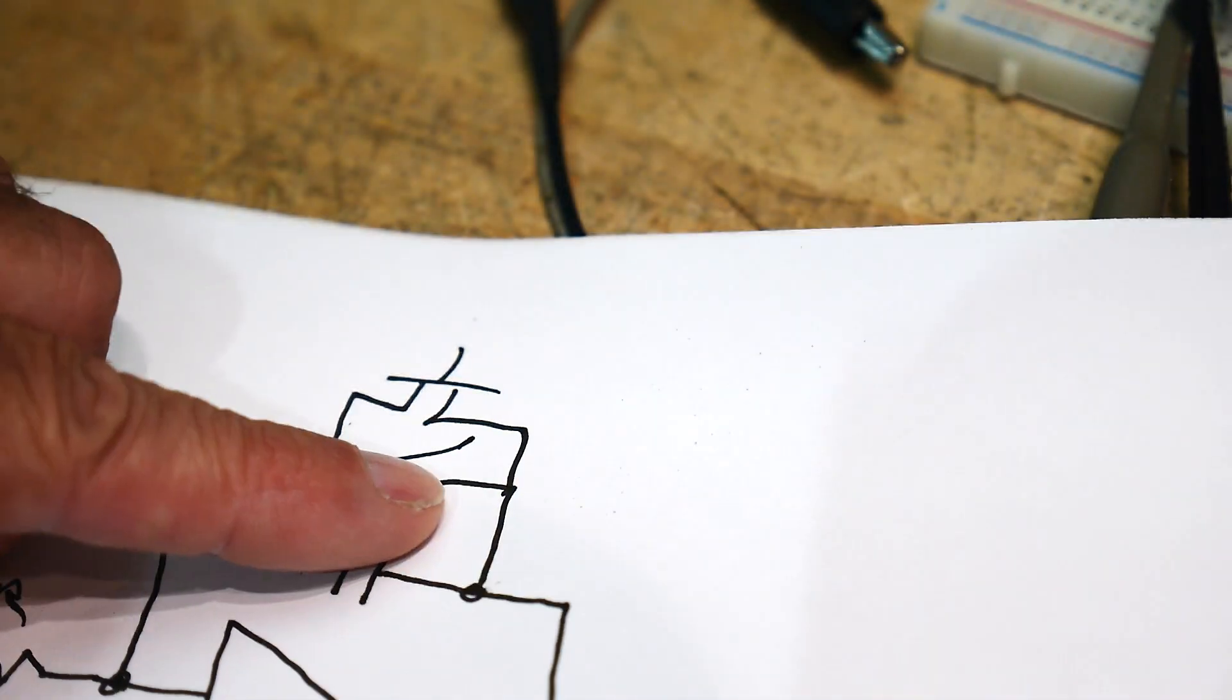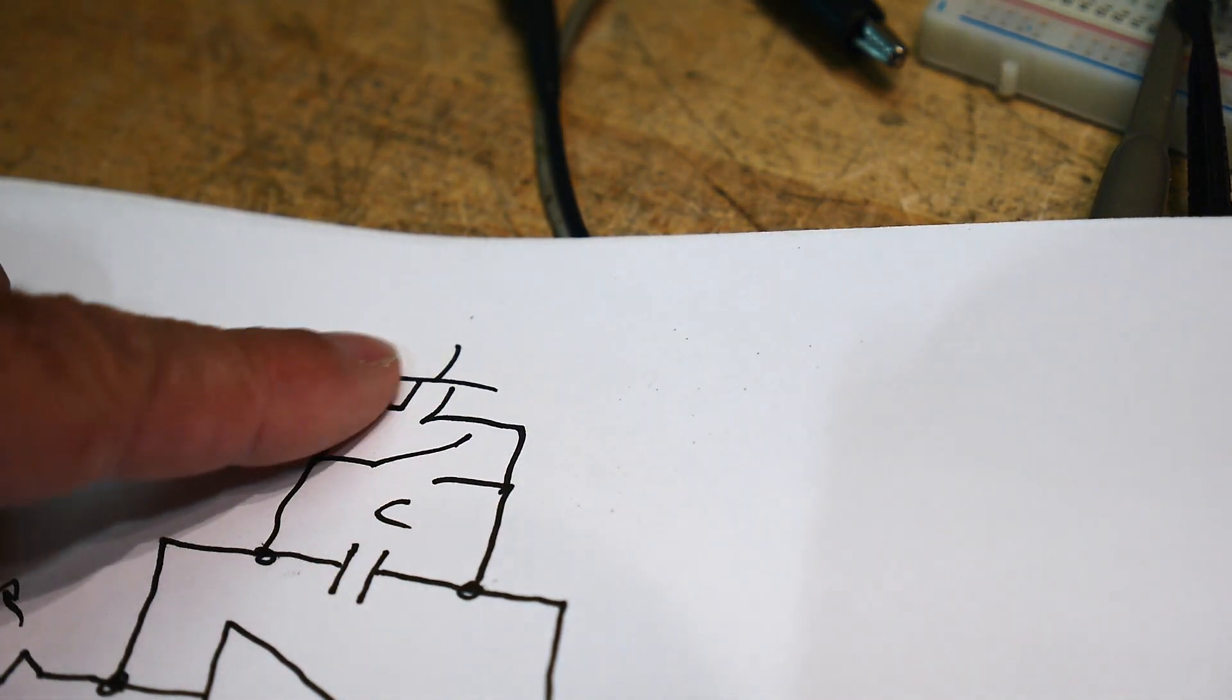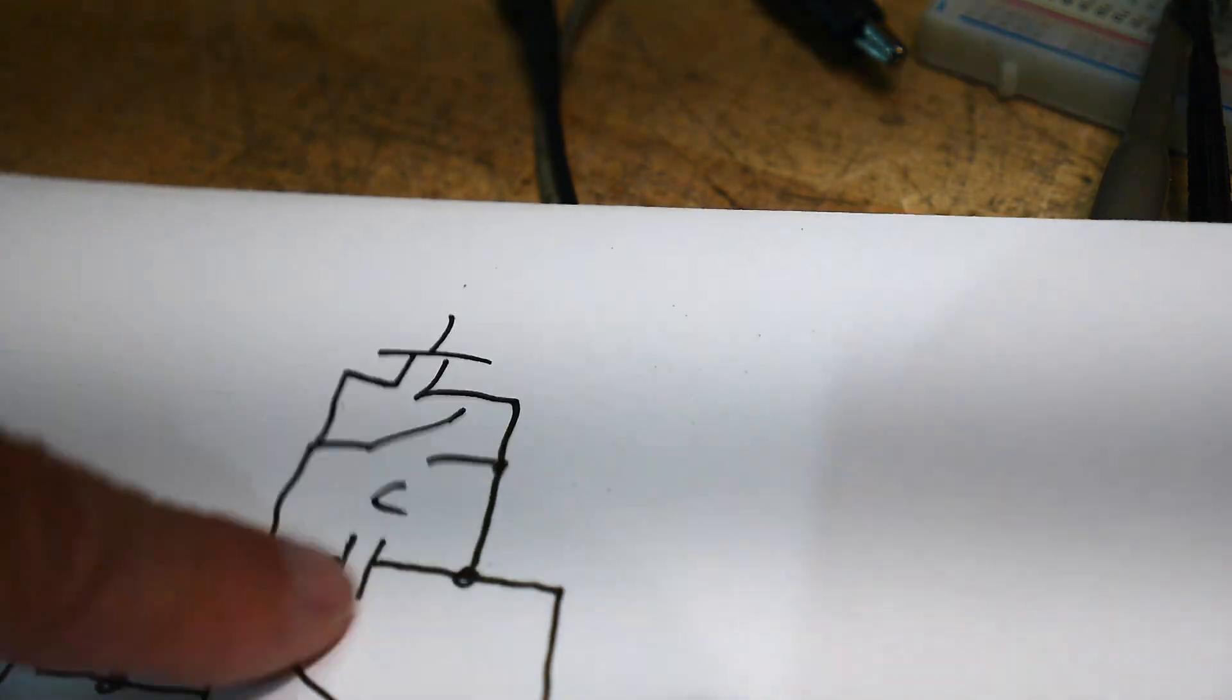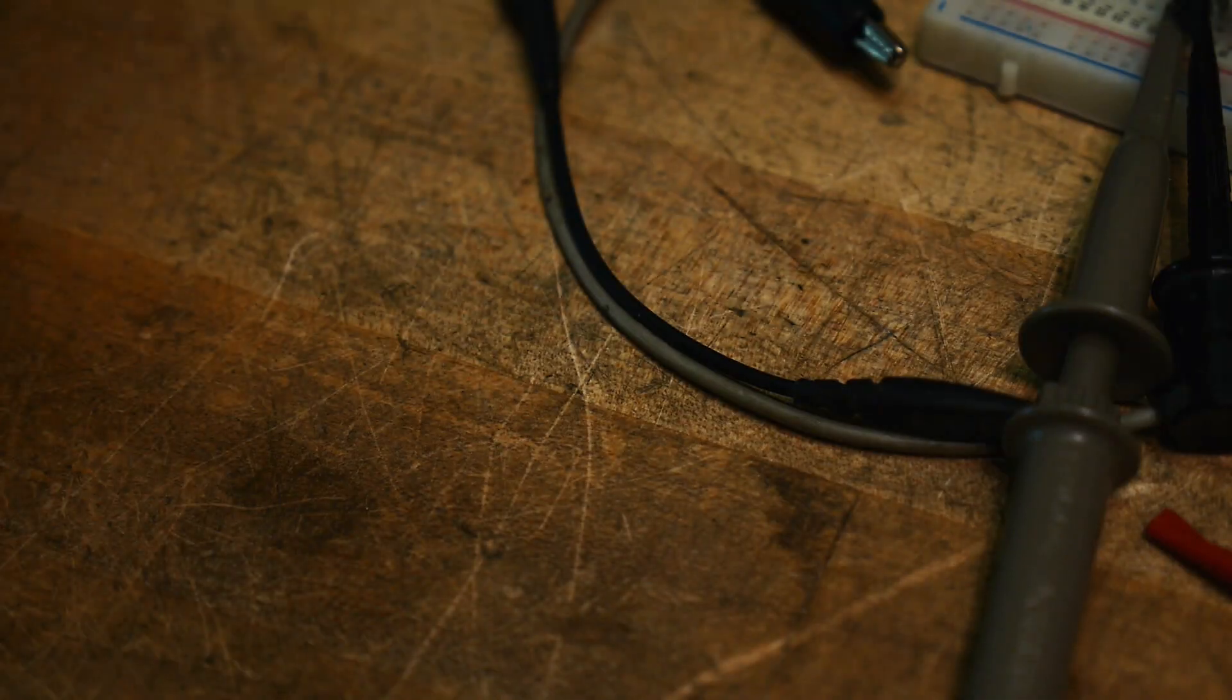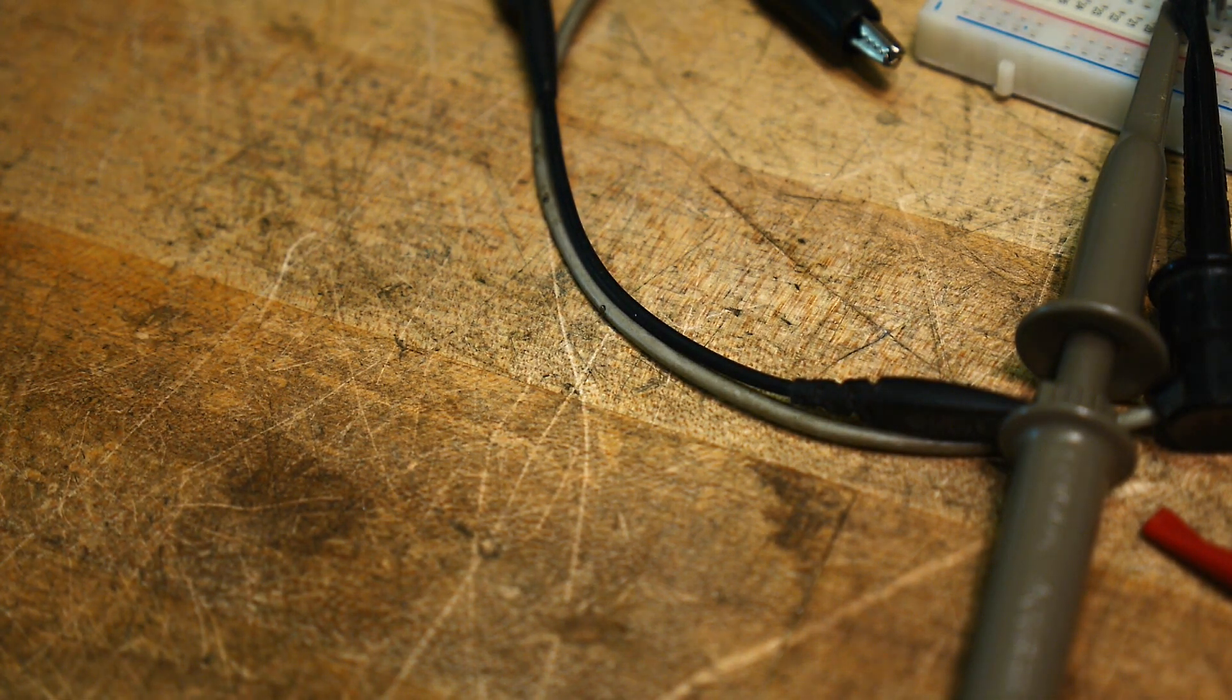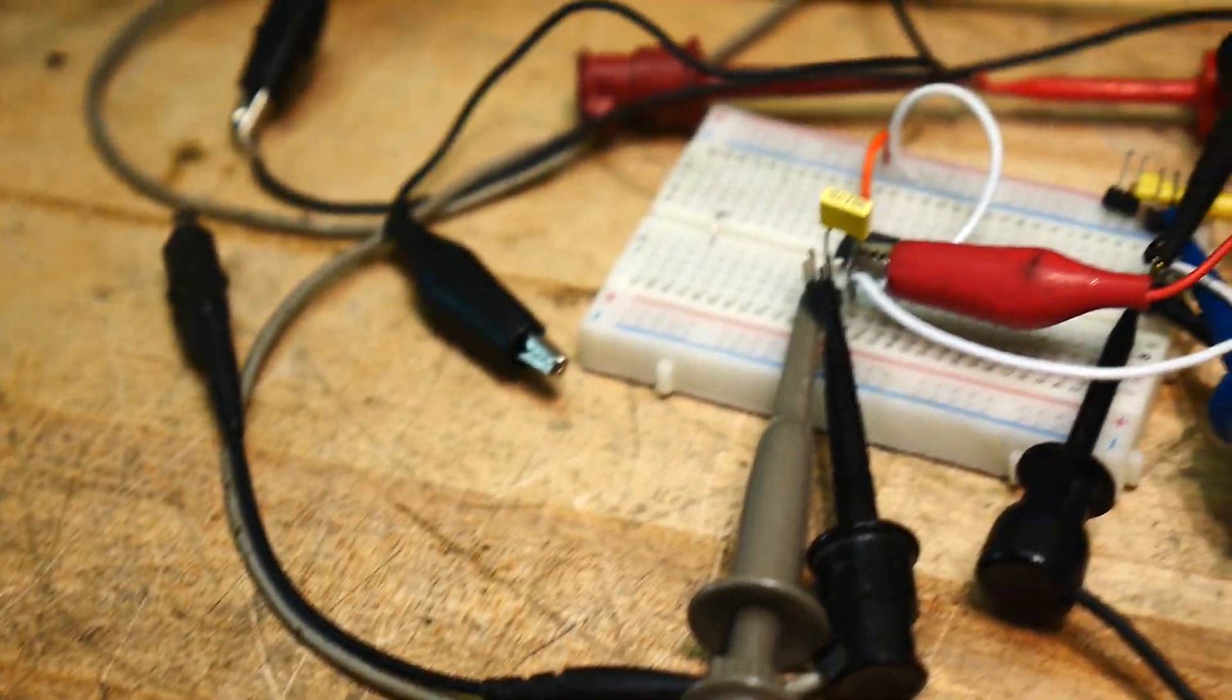You can also put in a J-FET, an N-channel J-FET or something, instead of a switch, which is what most analog switches are made out of anyway. But yeah, you need some type of reset on this capacitor. So I didn't want to go through the trouble of putting in a reset and having to time that reset to reset it exactly at the right time and everything.